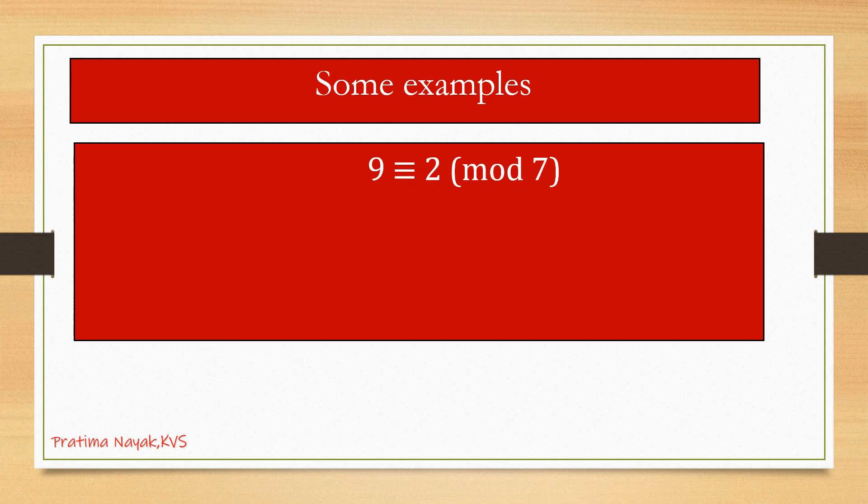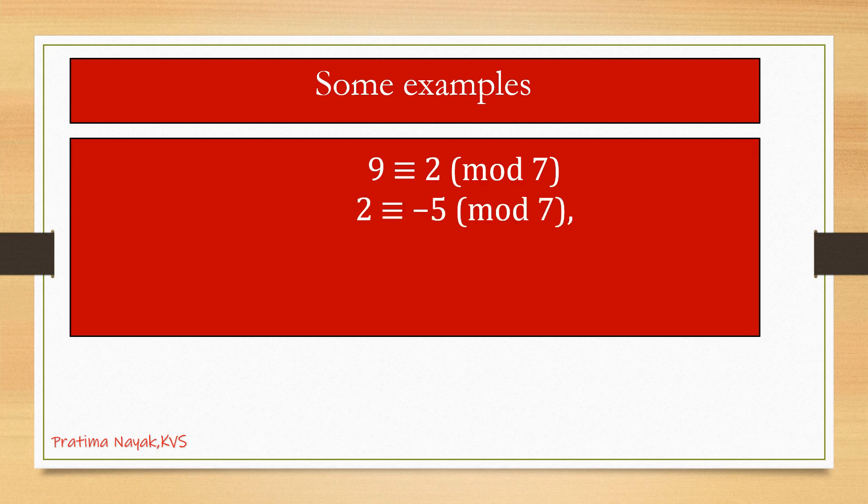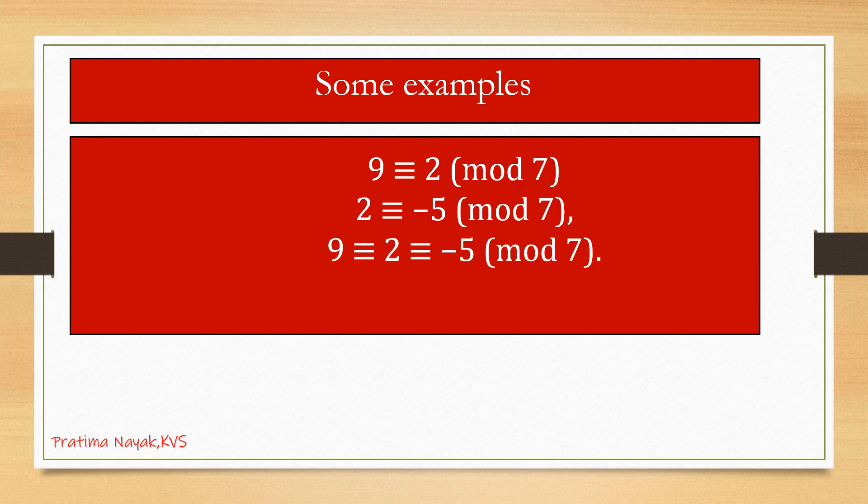Another example: 9 is congruent to 2 modulo 7, 2 is congruent to negative 5 modulo 7. So 9 and 2 are congruent modulo 7.